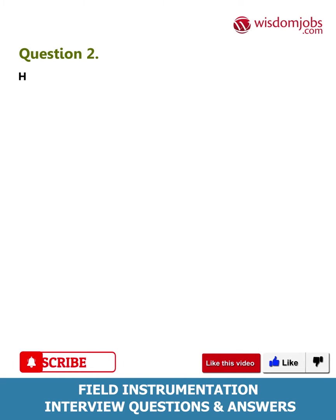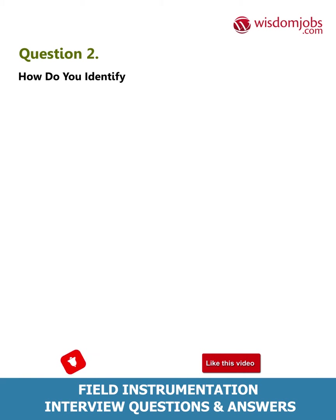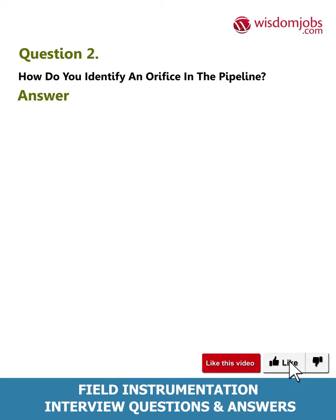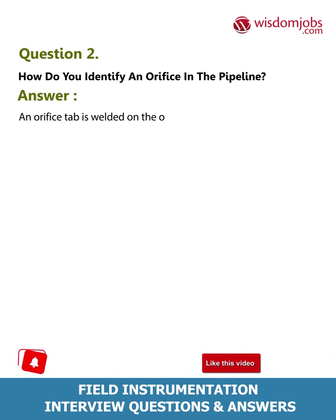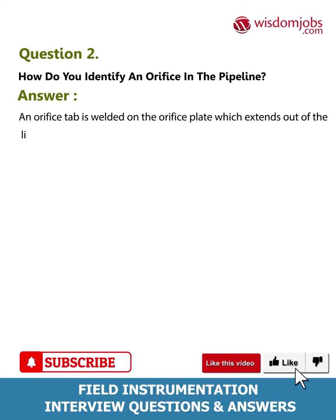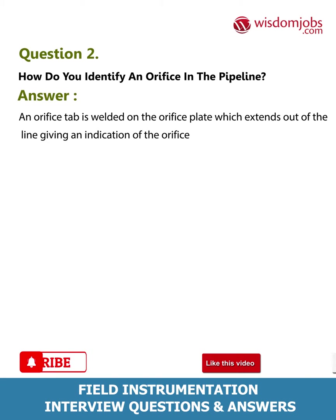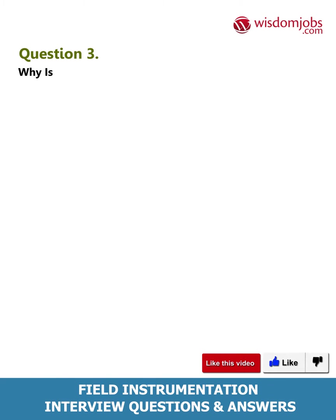Question 2: How do you identify an orifice in the pipeline? Answer: An orifice tab is welded on the orifice plate which extends out of the line, giving an indication of the orifice plate.